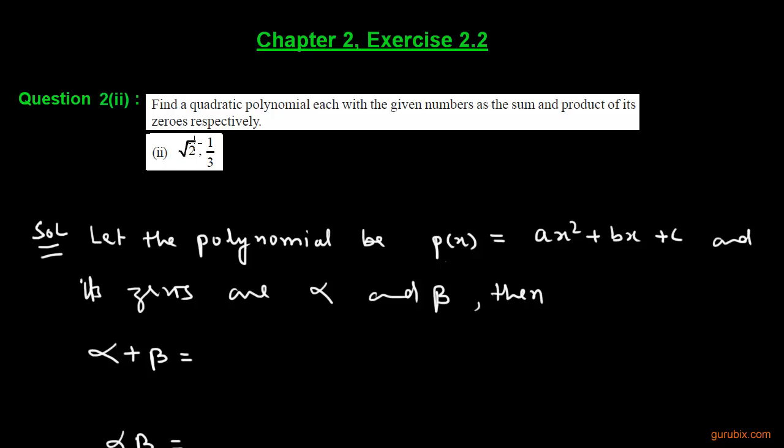Sum of its zeros is given root 2 and the product of its zeros is given 1 over 3. So let us see how to solve this question.